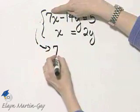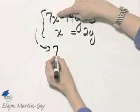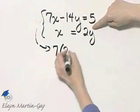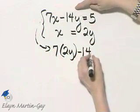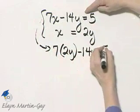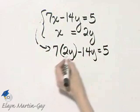So I'll write 7 times, instead of x, since x is 2y, I'll write 2y and then minus 14y is equal to 5. Now 7 times 2y, that's 14y minus 14y is equal to 5.